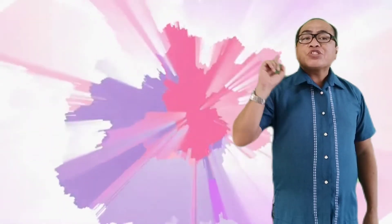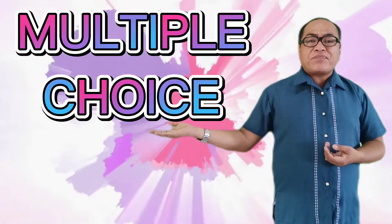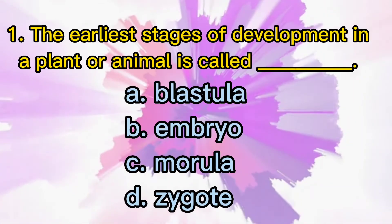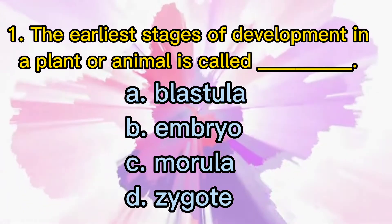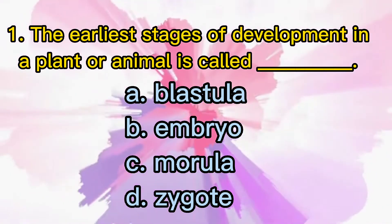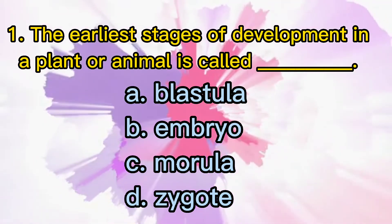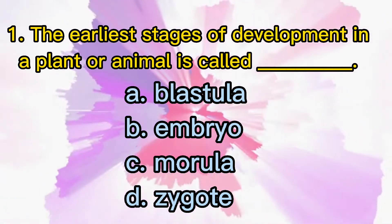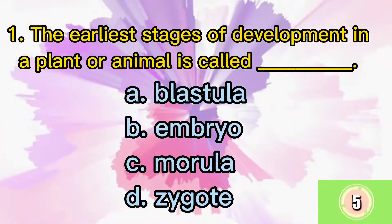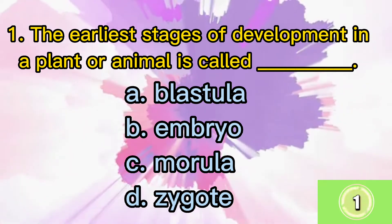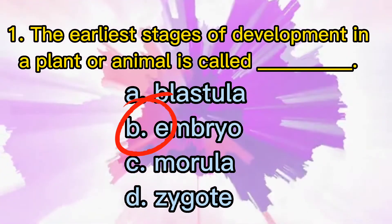Now that we have already discovered plant and animal growth, development and nutrition, let us check your knowledge by answering a multiple-choice activity. Choose the correct answer for each question. Bring out your pen and quiz notebook. Number 1: The earliest stages of development in a plant or animal is called blank. Letter A: Blastula. Letter B: Embryo. Letter C: Morula. Letter D: Zygote. The answer is Letter B: Embryo.